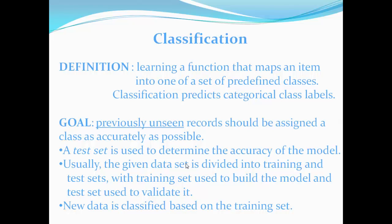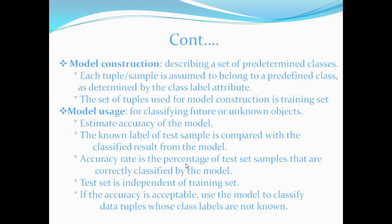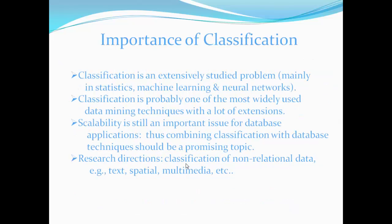A test set is used to determine accuracy and the data set is divided into training and test sets with the data as classified based on training set. Model construction: describing a set of pre-datamined classes with tuples and the set of tuples used for modeling. Model usage is for classifying future or unknown objects. Estimate the accuracy. Known label compared with classified results. Accuracy rate and if the accuracy is acceptable the model to classify data tuples whose class labels are not known.